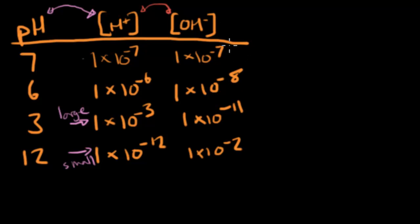going from 10 to the negative 7th to 10 to the negative 11th. So there's that relationship that we're supposed to see. But there's another more interesting relationship that happens when you add the exponents. If I add negative 6 and negative 8, I get negative 14. If I add negative 3 and negative 11, I get negative 14 as well.